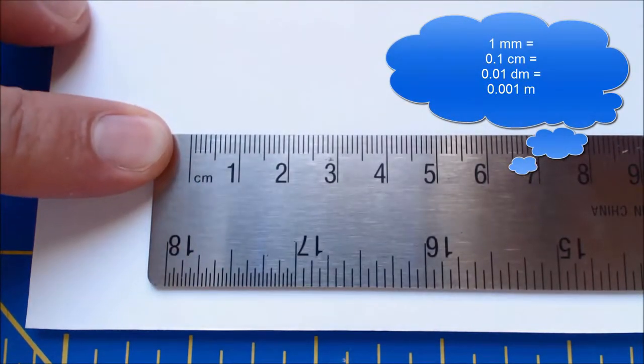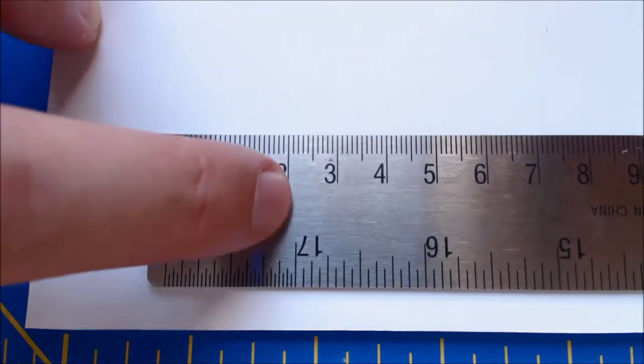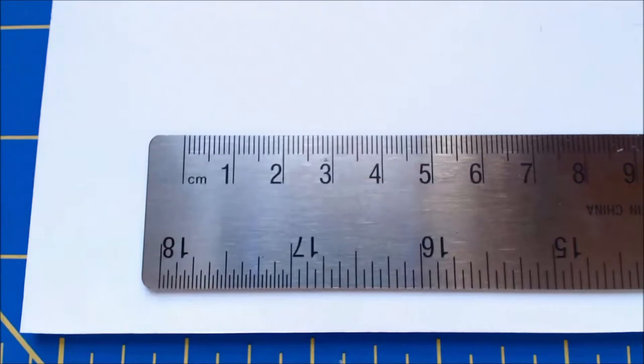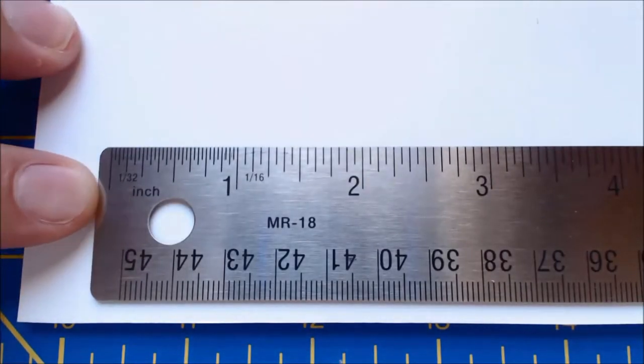Centimeters are divided into millimeters, which means there's ten little tiny marks between each big numbered mark. Because we're working with three sixteenths inch foam core, we're going to be using inches to do this layout.